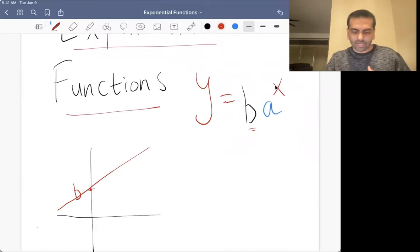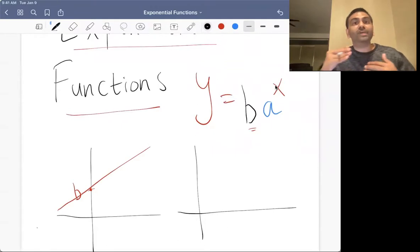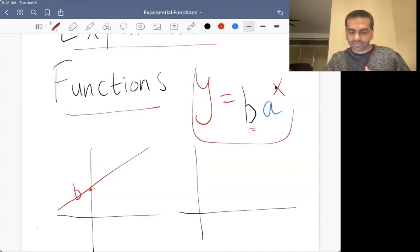With exponential functions, however, instead of growing by the same amount, the y grows by the same percentage every time x goes up by one. The way I've written this function, b a to the x, the b over here is the initial value, just like with lines.